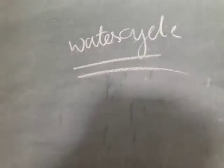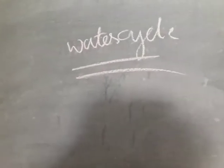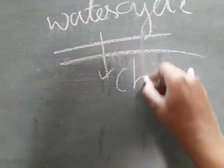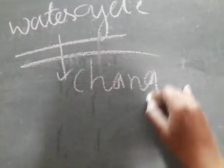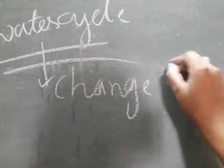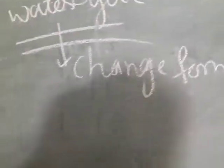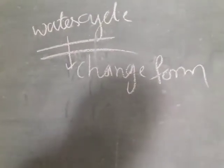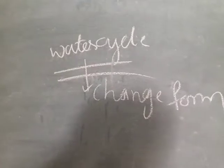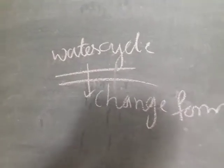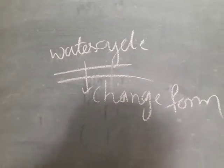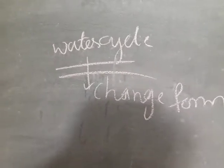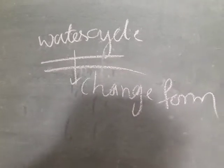Okay, children. In nature, water keeps changing its form. These changes in form are called the water cycle. The water is always changing its forms — this forms the water cycle.